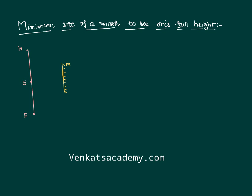I would like to calculate the minimum size of this mirror so that we can see ourselves completely. What can happen is the light ray from the head part might be striking one end of the mirror, and that light ray reflects back towards the eye so that the eye is able to see that object. Light from the feet part also moves like this and it also reflects back to the eye.